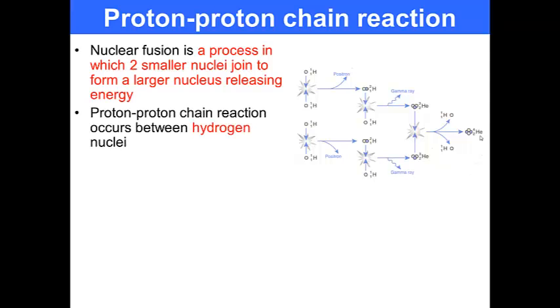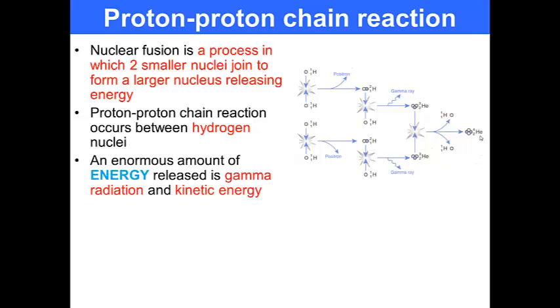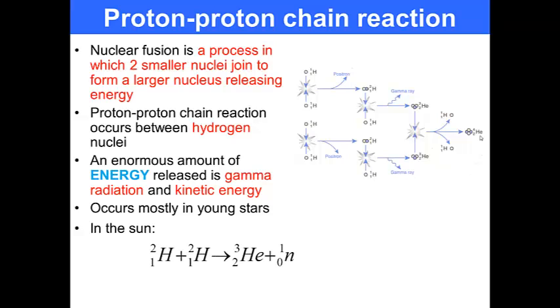Proton-proton chain reactions occur between the hydrogen nuclei. An enormous amount of energy is released in gamma radiation and in kinetic energy. It occurs mostly in young stars. In the sun, we have two hydrogen atoms come together to form a helium atom and this neutron. This produces electromagnetic radiation and makes stars shine.